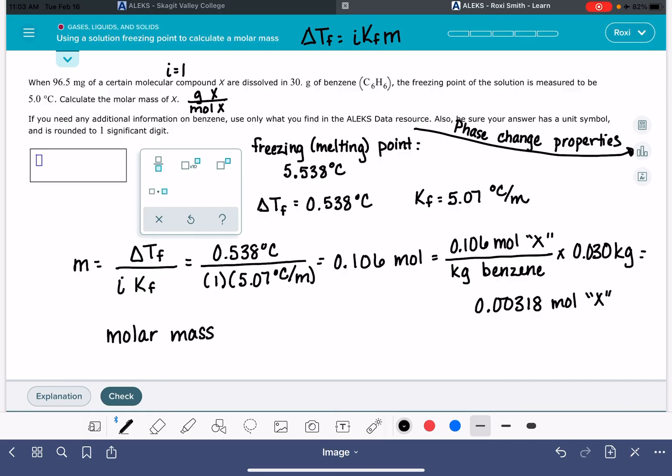Now we can calculate the molar mass. The molar mass is going to be the grams of our X. We got our grams in milligrams, so we need to convert that to grams: 0.0965 grams divided by our moles, 0.00318 moles. It wants this in one significant figure: 30 grams per mol.